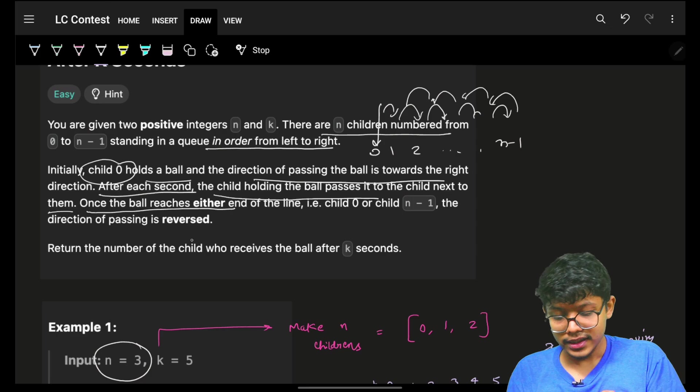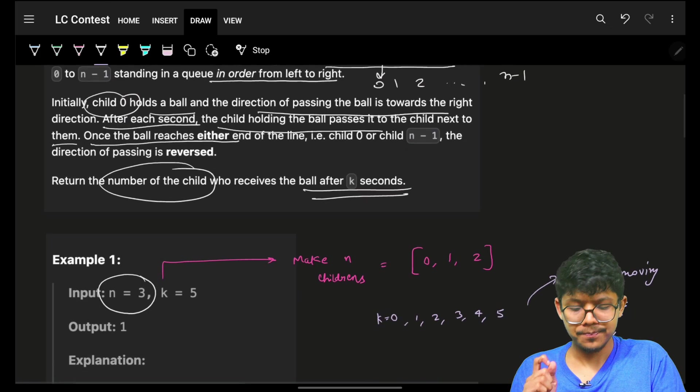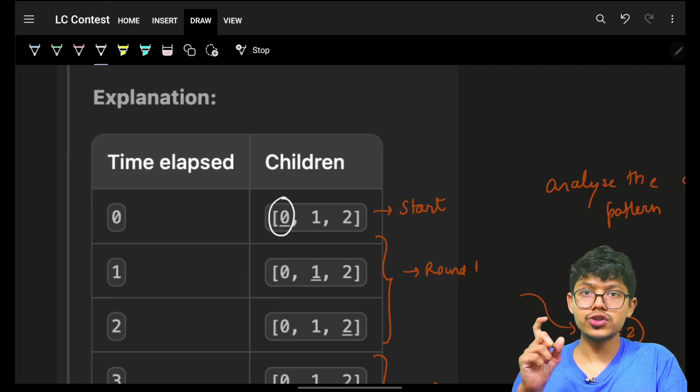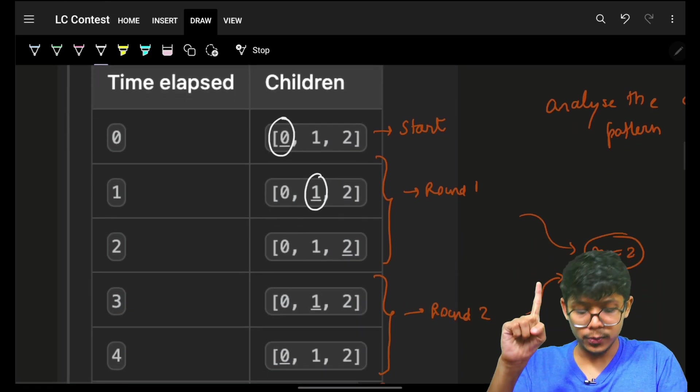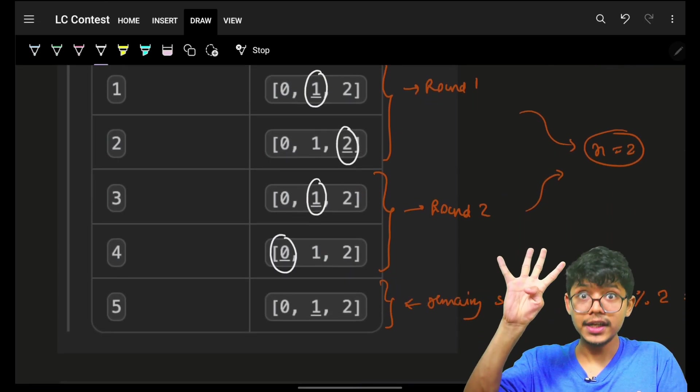And ultimately, you have to tell the number of the child who is holding the ball after k seconds. For example, in this, you will see that in the very beginning, the ball is with the 0th child. In the first second, it will go to child 1. Next second, child 2. Next second, child 1. Next second, child 0.